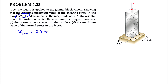In the A part, we need to find the magnitude of P. In the B part, the orientation of the surface on which the maximum shearing stress occurs. In the C part, we need to find the normal stress exerted on that surface. And in the last part, we have to find the maximum value of the normal stress in the block.